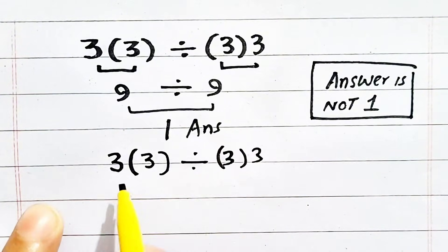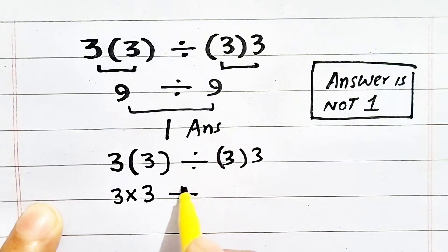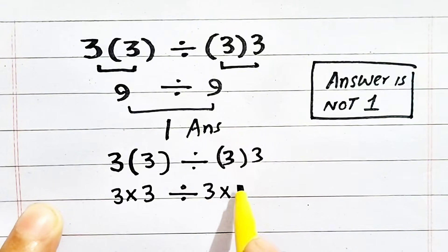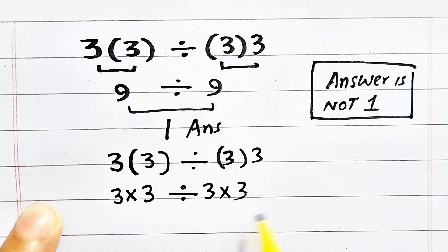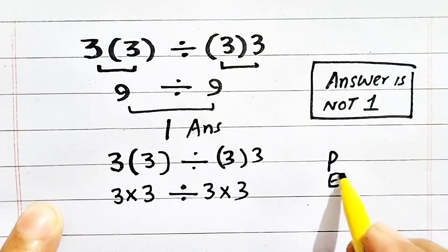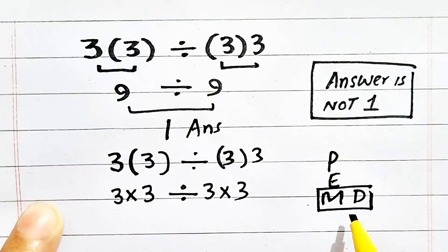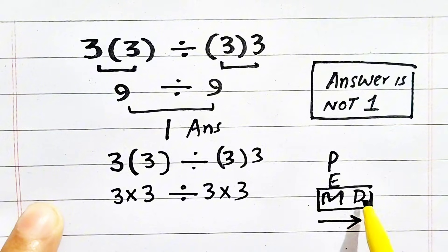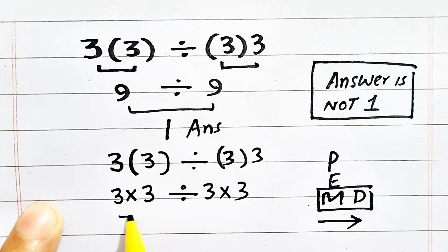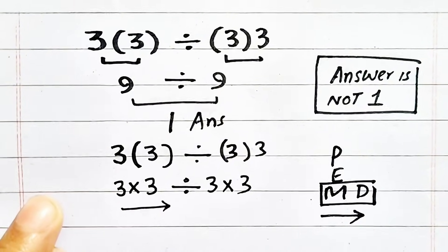PEMDAS says that first of all, we resolve parentheses, so 3 times 3 divided by 3 times 3. Now, according to PEMDAS, we have multiplication and division both, so we have to move from left to right because they have equal priority. Multiplication and division both have equal priority. So we have to move from left to right while solving this question accurately.